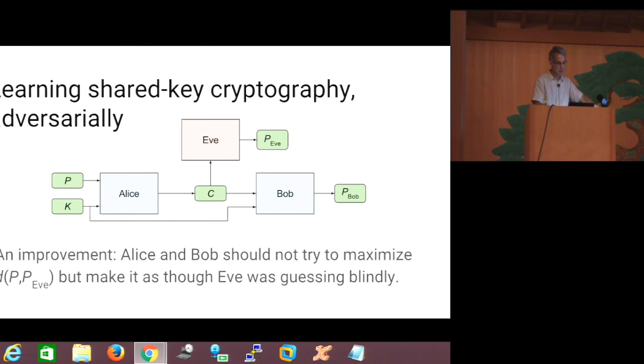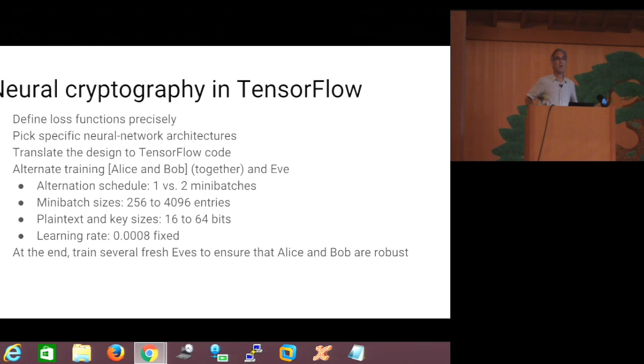So to turn these ideas into TensorFlow, what do we need to do? Well, we define the loss functions precisely, and there is a little bit of hackery and engineering, and a bit of black magic in picking the exact coefficients for these loss functions. In particular, Alice and Bob are trying to do two things at once, and we need to decide how much we care about one versus the other. Then we have to pick a specific neural network architecture, exactly what we use, how many neurons, and how they're organized, and how they're connected. And we try to be very agnostic there. We are trying not to hardwire a particular crypto system. We're trying to let Alice and Bob decide which connections are useful. So we use a neural network with lots of connections. And then we translate this design to TensorFlow code, and we train.